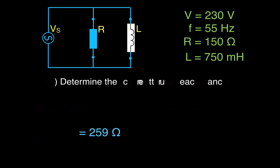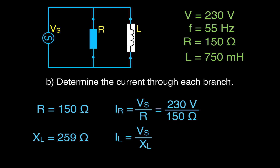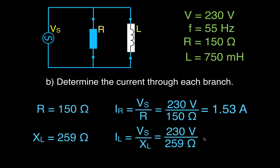Now we have the resistance, which was given, and the inductive reactance, which we just calculated, and now we can calculate the current through each of those branches. Remember, this is a parallel circuit, so we know we have a 230 volt source. We're going to use Ohm's law for each branch — it's just the voltage divided by the resistance or the inductive reactance. The voltage is the same across each branch. We get a current through our resistor of 1.53 amps, and 0.89 amperes for the current through our inductive branch.